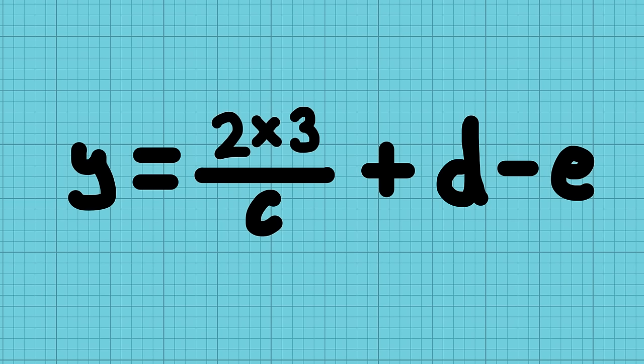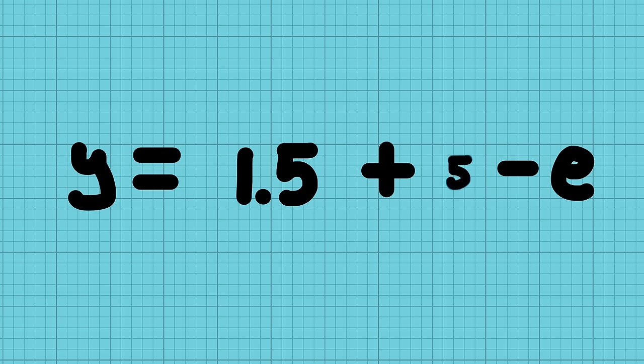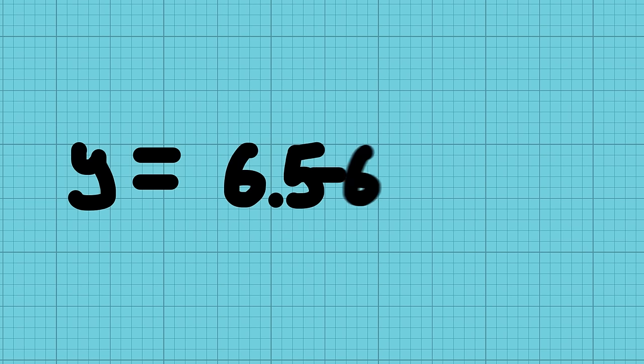Any variables that are just next to each other are multiplied with each other and you do these first. At the same time you do any divisions, but only if it's a single number divided by another number. And then you do the additions and subtractions.